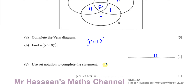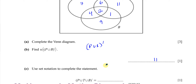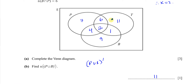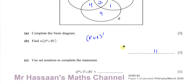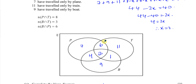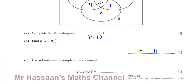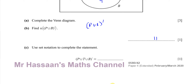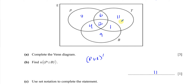Part C asks us to use set notation to complete the statement for (P union T union B) complement. P union T union B covers everything inside all three circles. Since all 40 students went by one of these three means, nothing is outside. So the complement is the empty set, denoted by the symbol ∅ or an empty pair of curly brackets {}.